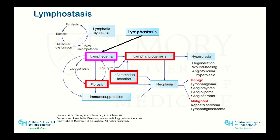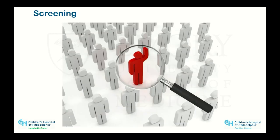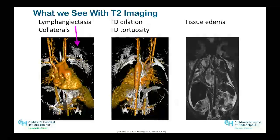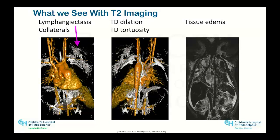If you have lymphostasis — which everybody with elevated right-sided pressures is going to have — it leads to lymphedema and a cascade of events causing fibrosis, inflammation, and lymphangiogenesis. This has to do with all the edema seen in myocardial infarction and other conditions. This process is happening all the time in any wet tissue.